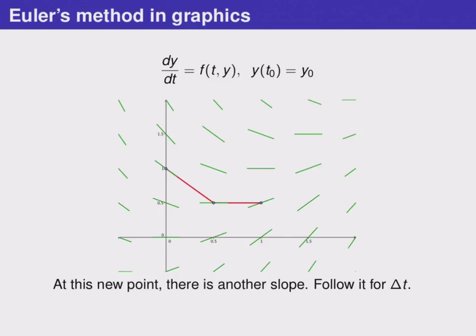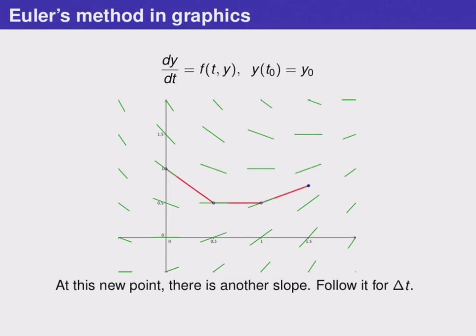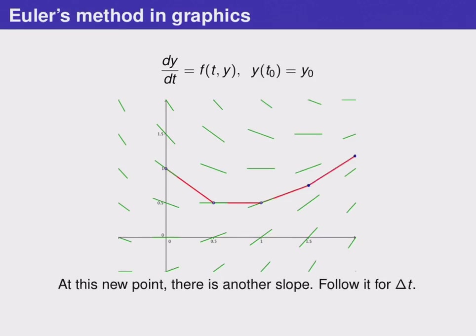After we've arrived at that point, there's another slope, and so we'll follow that slope horizontally for a short distance delta T, and we'll follow up or down however much the slope indicates. When we arrive at that point, there's another slope, and so on. At each point, we follow the slope for a short horizontal distance, using the slope to determine how far up or down we should go.